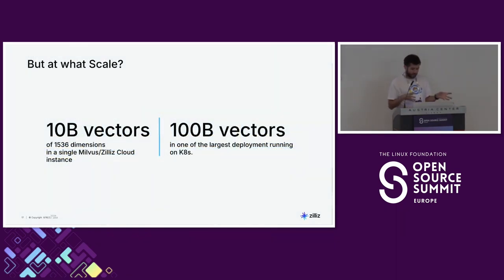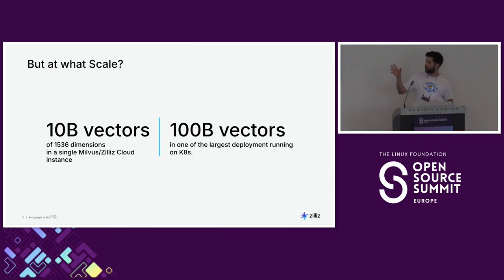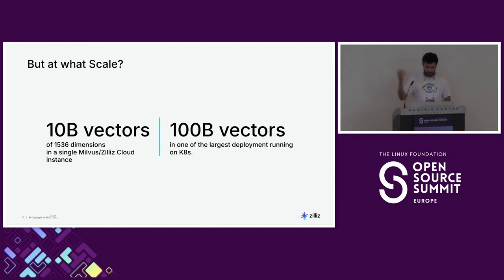At scale, if you don't run on Kubernetes, we're talking about 10 billion vectors in a single Milvus instance. If you're running on Kubernetes, we're talking about 100 billion vectors. We actually have a customer running that right now — everything on Kubernetes with about 100 billion vectors.